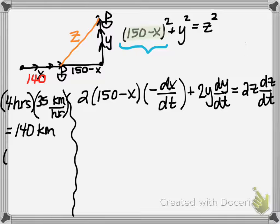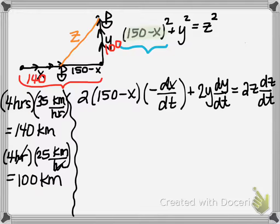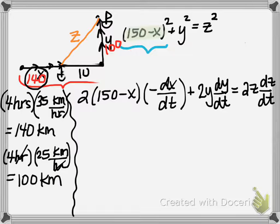We do the same for ship B. Over 4 hours at 25 kilometers per hour, ship B has traveled 100 kilometers north. So y = 100 at 4 p.m. Since the original distance between the ships was 150 and ship A has traveled 140, the base of the triangle is 150 − 140 = 10 kilometers. I now have a right triangle and need to use the Pythagorean theorem to find z at 4 p.m.